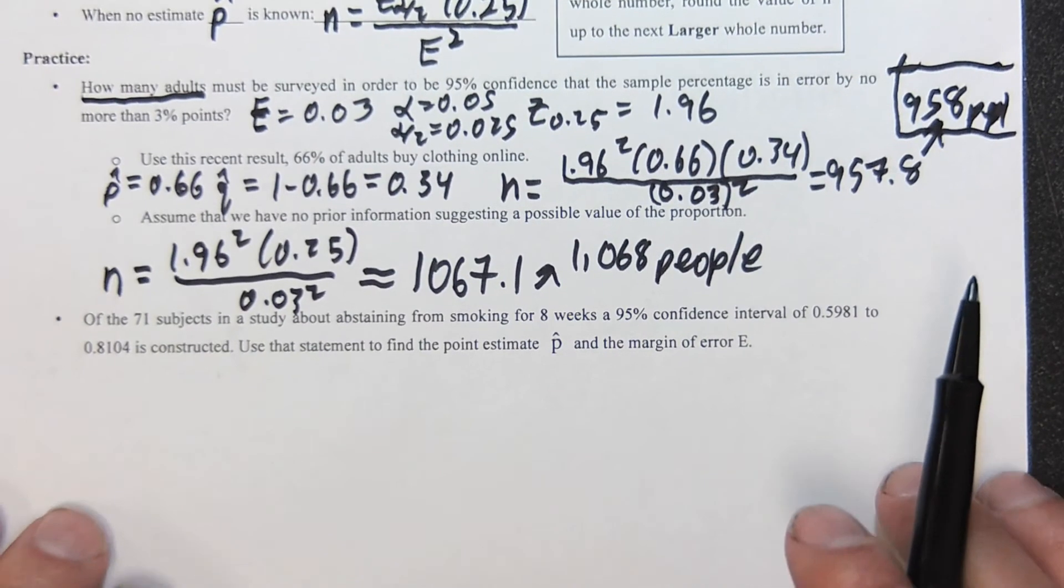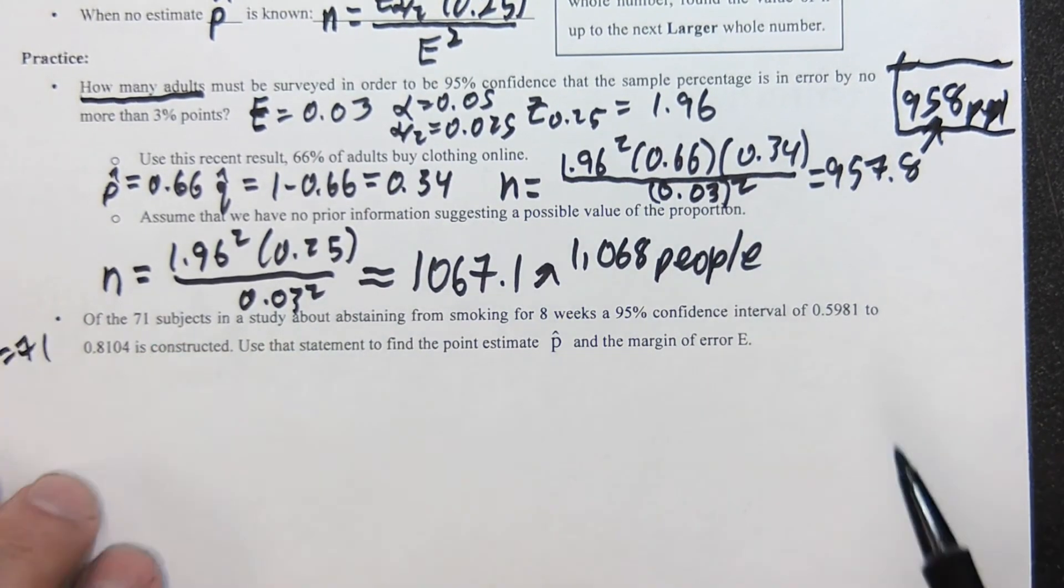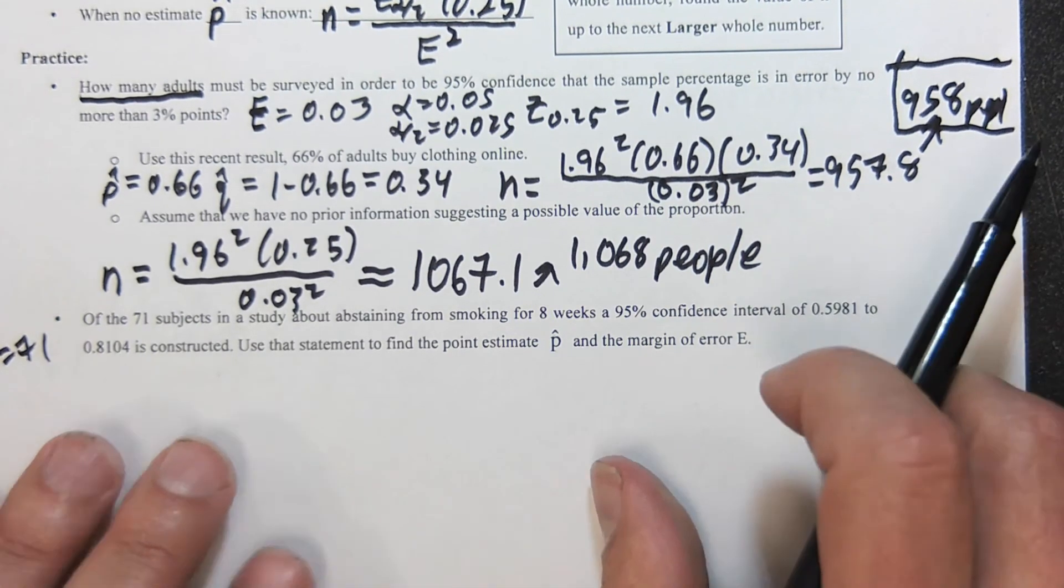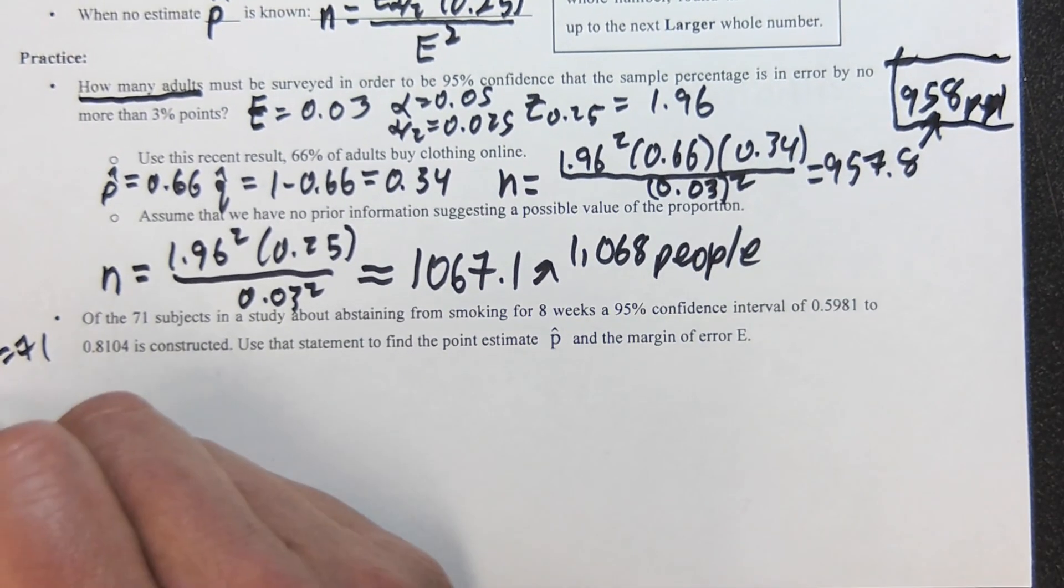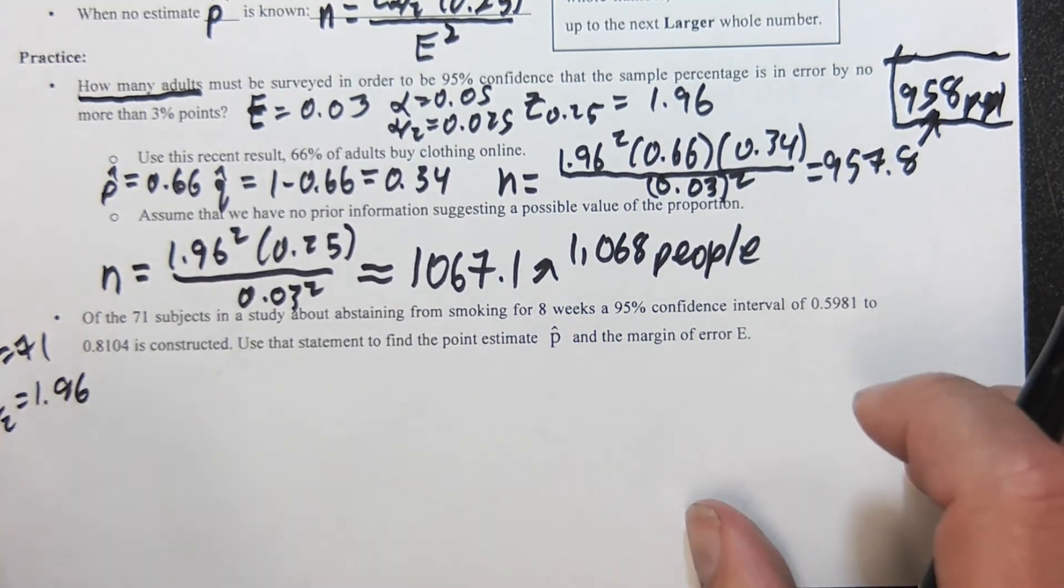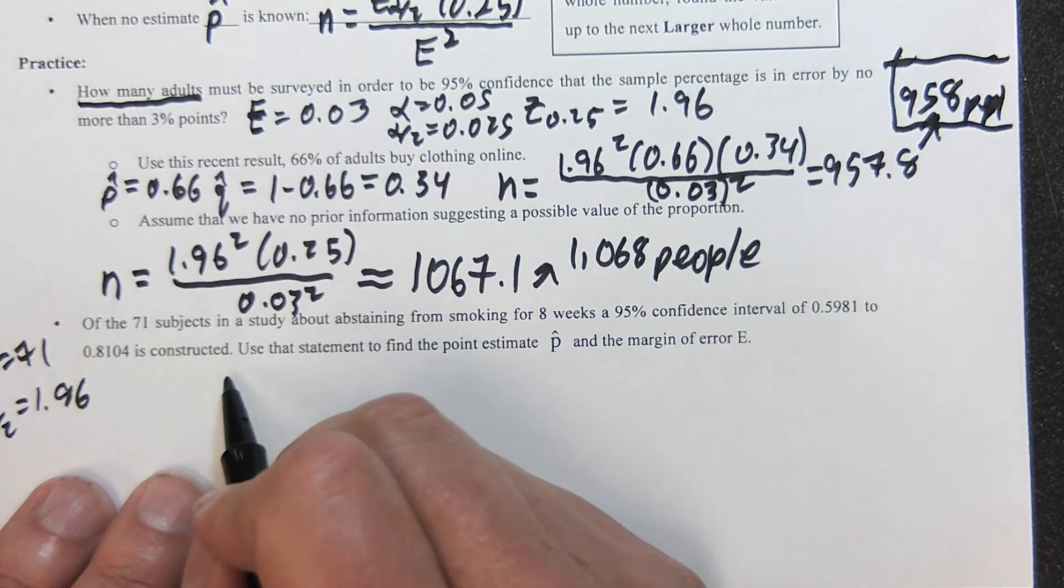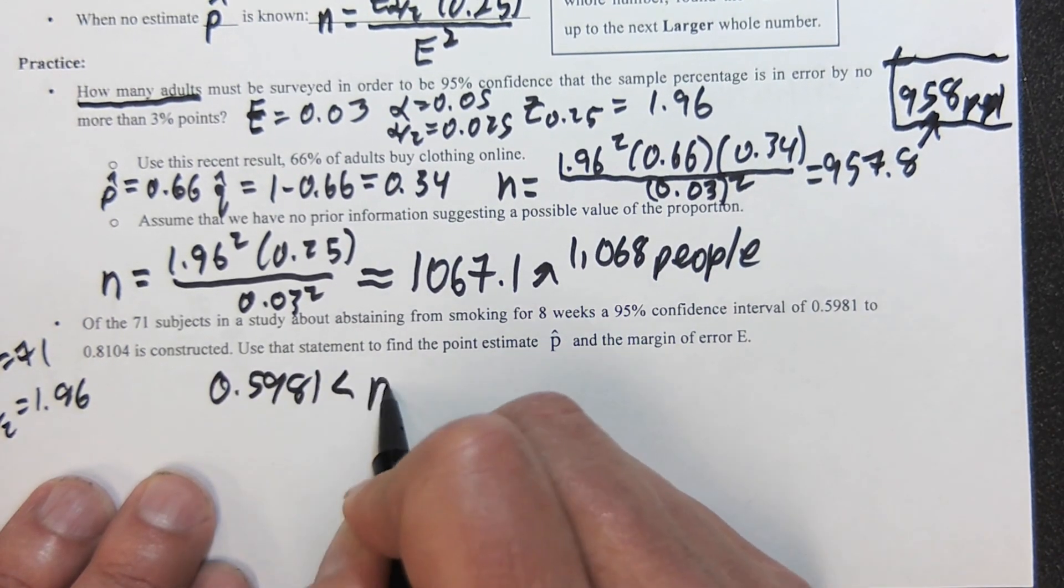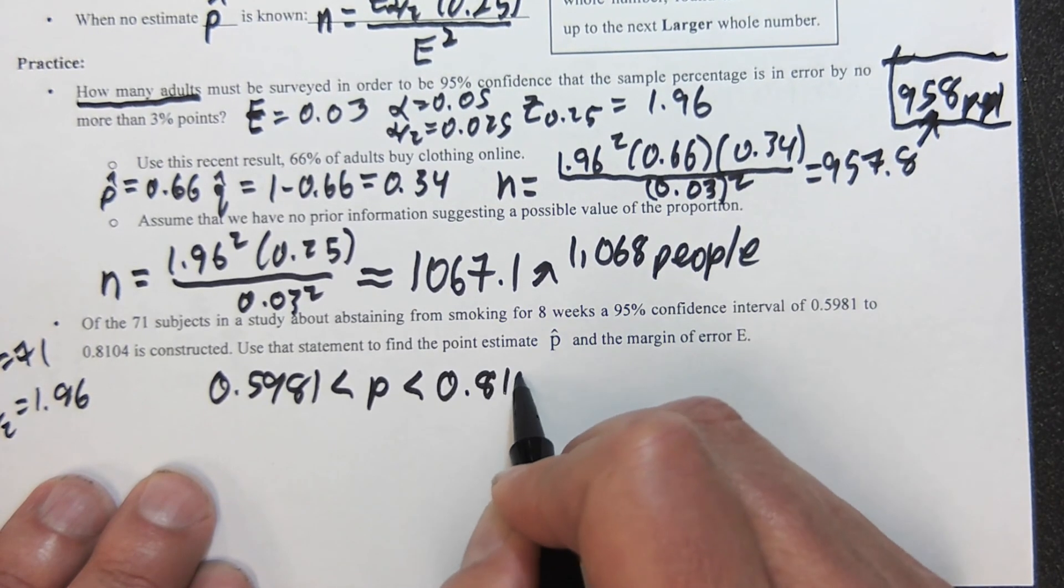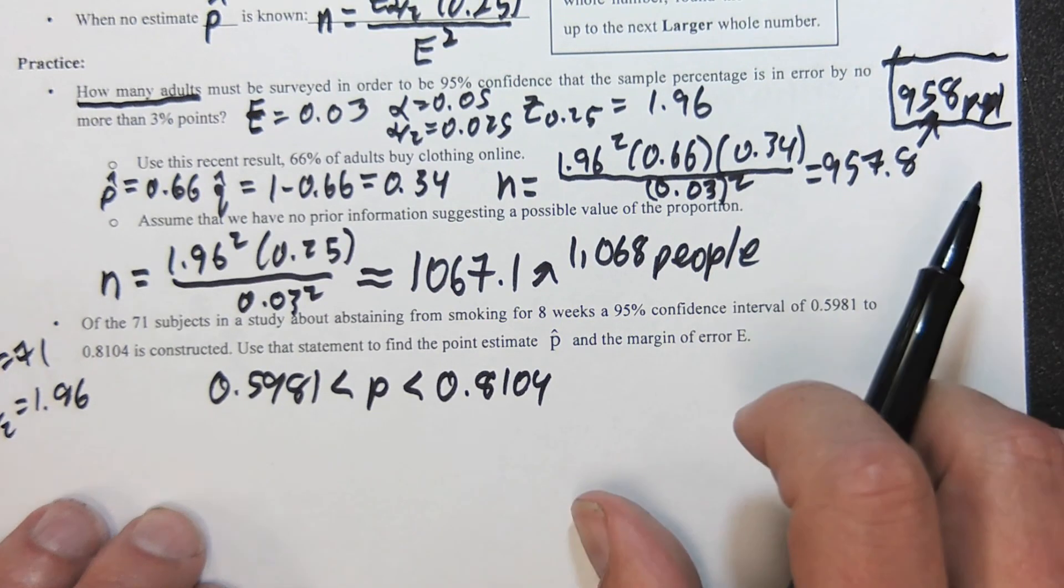Of the 71 subjects—there's n, n is 71—in a study about abstaining from smoking for eight weeks in 95% confidence interval. This means Z sub alpha over 2 is going to be 1.96 again. They give us the interval: 0.5981 up to 0.8104. We want the best point estimate of p hat and e.